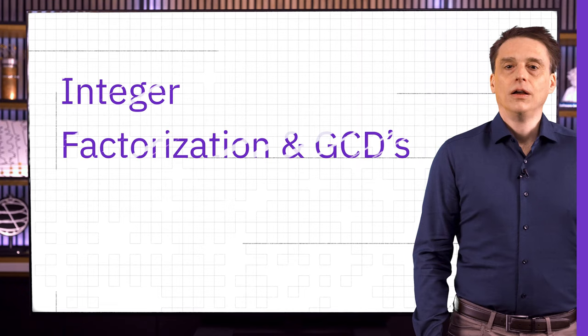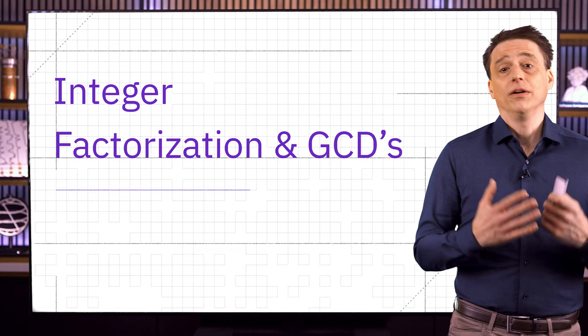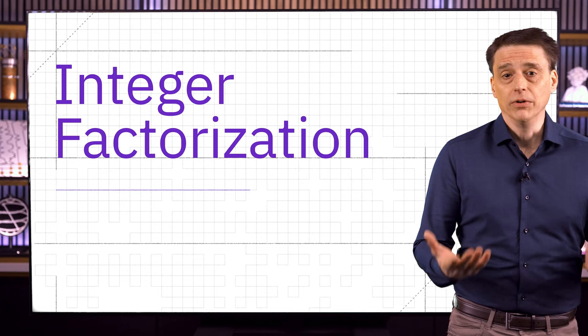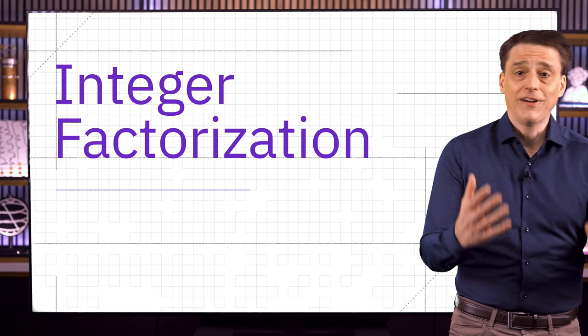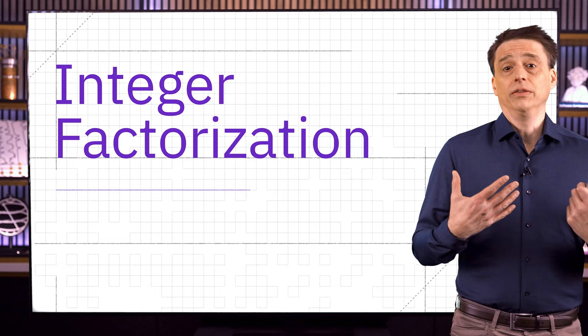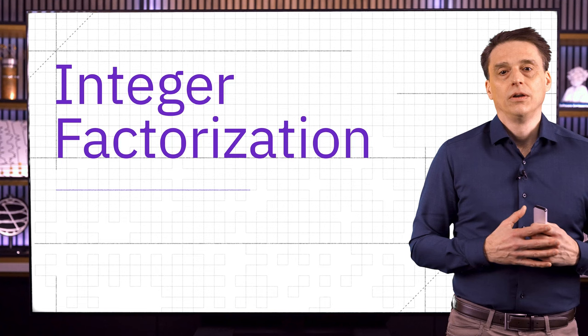The classical computers that we have today are truly marvels of technology — they're incredibly fast, but they're not so fast that no computational problem is beyond their reach. Some computational problems are so inherently difficult that, although we do have algorithms to solve them, no computer on the planet Earth today is fast enough to run these algorithms to completion on even moderately sized inputs within the lifetime of a human, or even within the lifetime of the Earth itself. To explain further, let's take a look at the integer factorization problem.